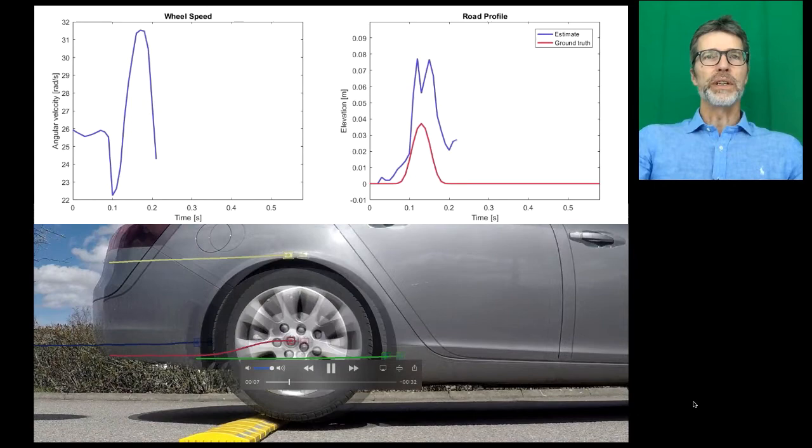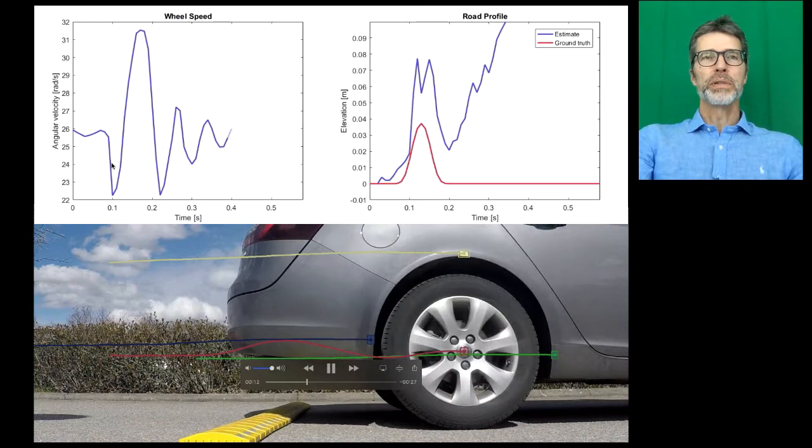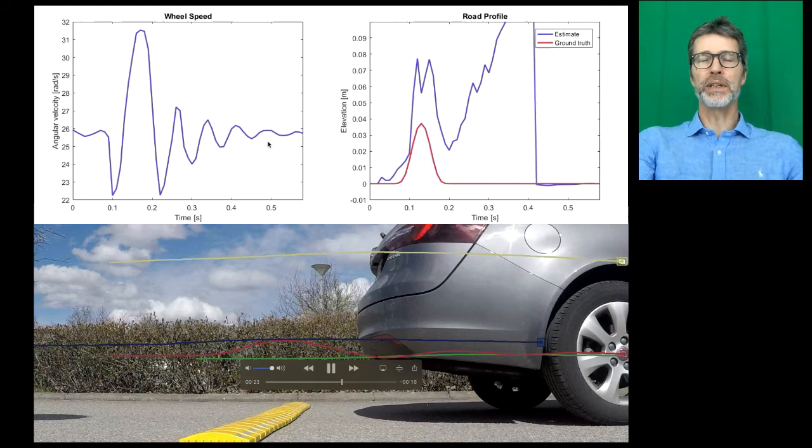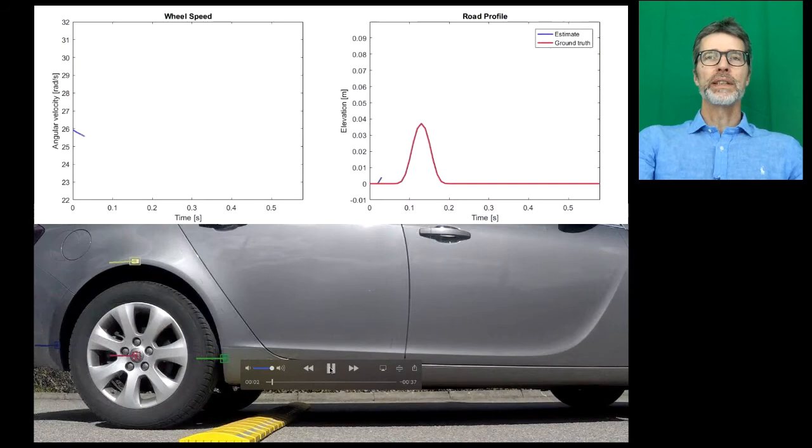Let's look at the wheel speed here. When you hit the bump, the speed decreases, but then you excite the dynamics of the tire and drive line, so you get this pulse response-like shape here. That depends on the speed bump profile as well.